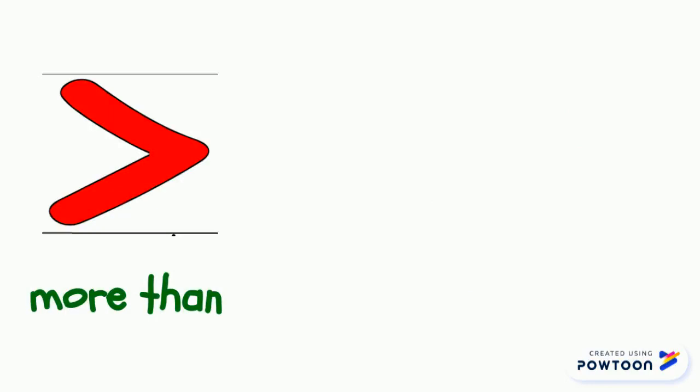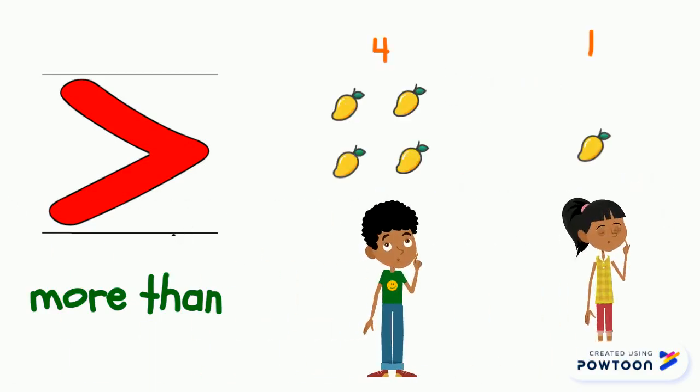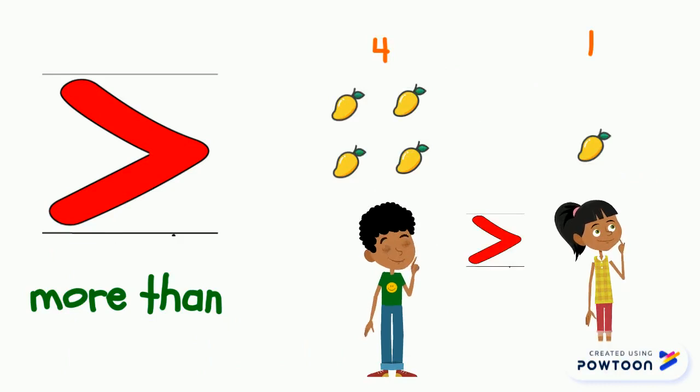This is the more than sign. When a number is more than another number, we say that it is bigger or its quantity is greater. Look at John and Mary. John has more mangoes than Mary.